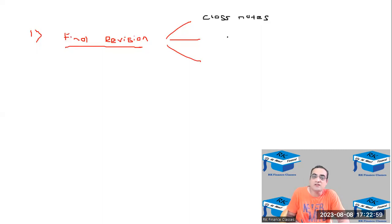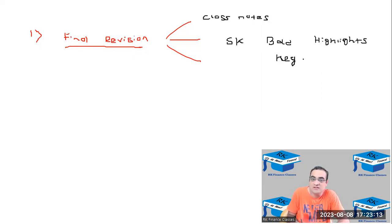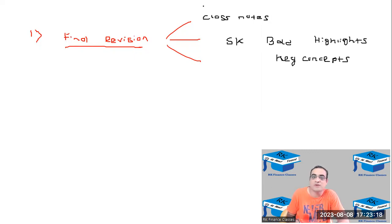Second, in Schweser's Kaplan, whatever bold words are there on any page, read those. Apart from that, whatever highlights and underlines you have done, read those as well. And at the end of each chapter, they have mentioned some key concepts — read those too. So these are things number one and two that you need to read.